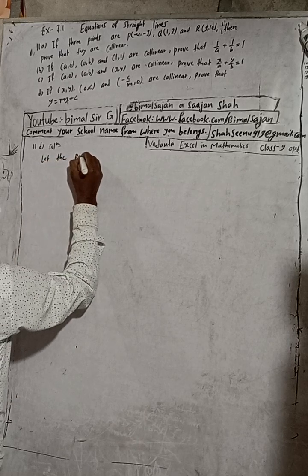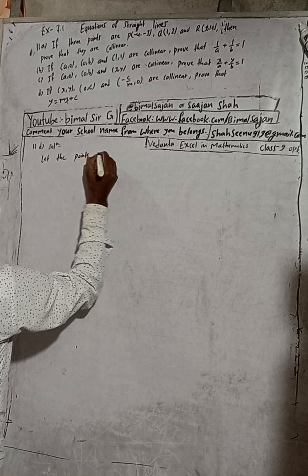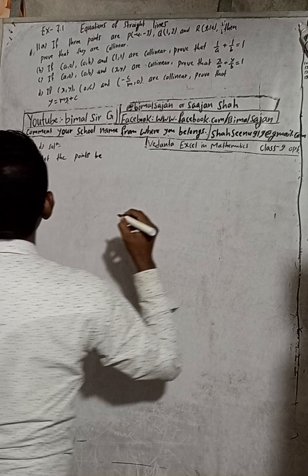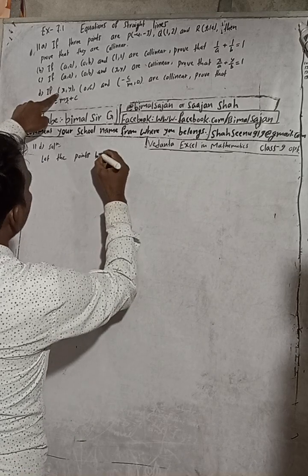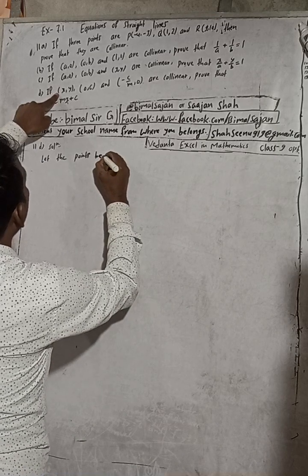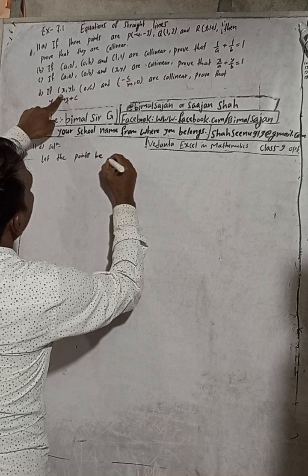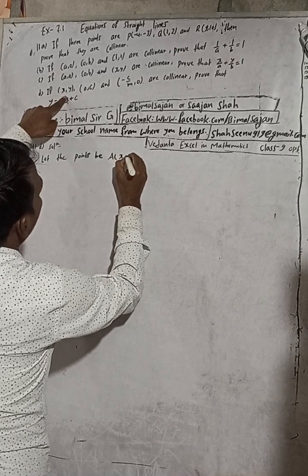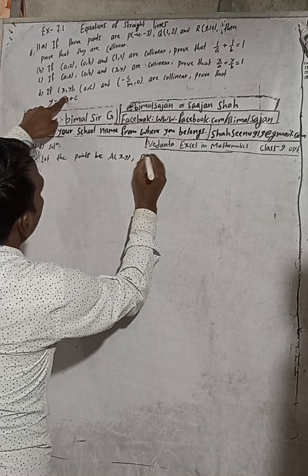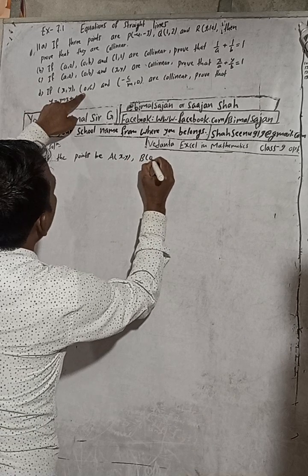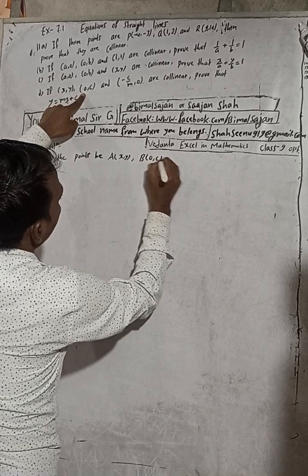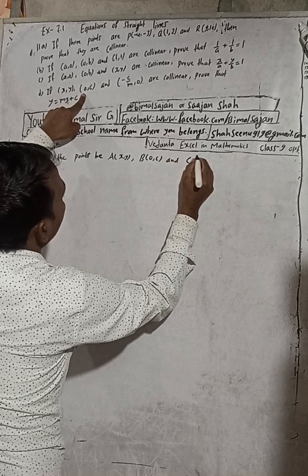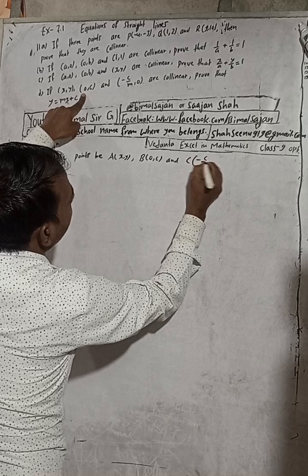Let me write the points correctly. Let the points be A (x, y), B (0, c), and C (-c/m, 0).